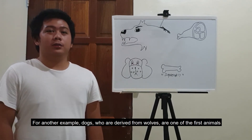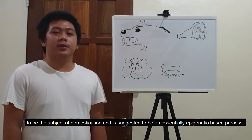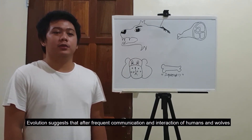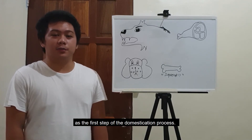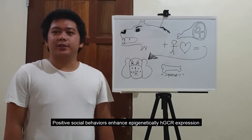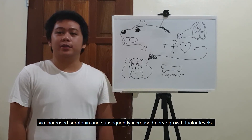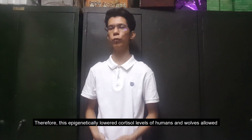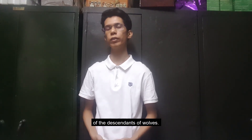For another example, dogs, who are derived from wolves, are one of the first animals to be the subject of domestication and this is suggested to be an essentially epigenetically based process. Evolution suggests that after frequent communication and interaction of humans and wolves of the same ecological niche, they reduced stress and aggression as the first step of the domestication process. Positive social behaviors enhance epigenetically HGCR expression via increased serotonin and subsequently increased nerve growth factor levels, leading to lower cortisol levels that promote social learning and cognitive inhibition. Therefore, these epigenetically lower cortisol levels allowed for non-violent interactions that over time allowed for the emergence of the descendants of wolves.